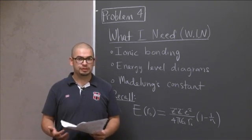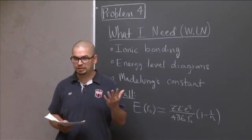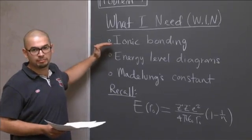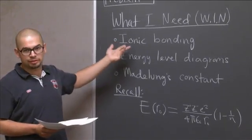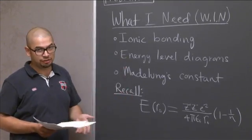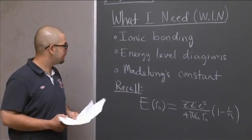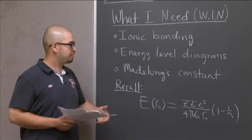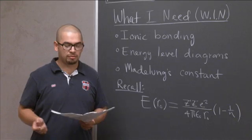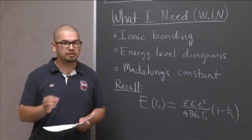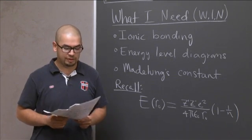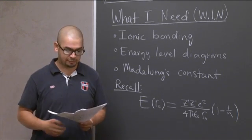Before you attempt the problem, there's certain background information that you should know. One is knowledge in ionic bonding because the problem deals with ions. Two, how to draw an energy level diagram, it's very important. And three, what Madelung's constant is. Before attempting the problem, it's a good thing to read the whole problem in detail and make sure you don't skip anything so that you get all the information that's given to you, because that's very important.